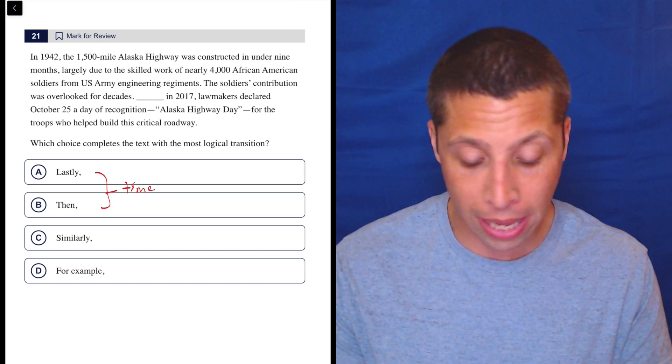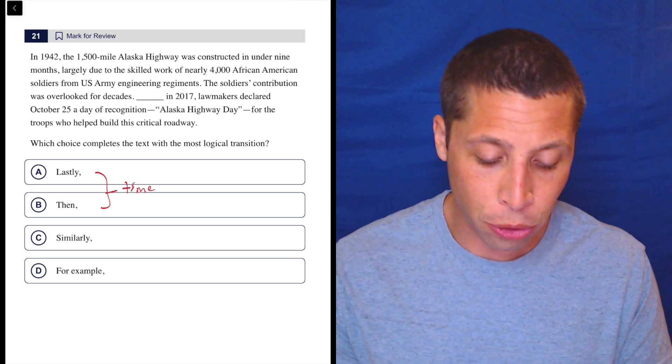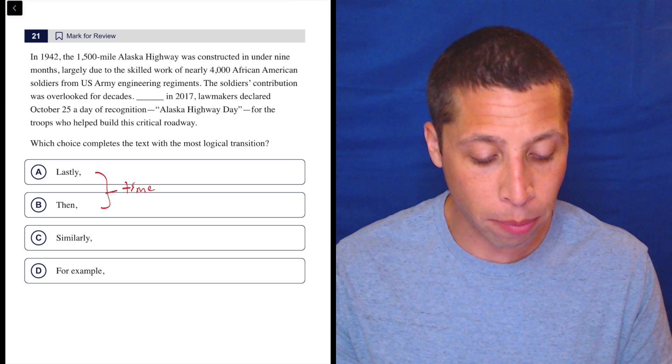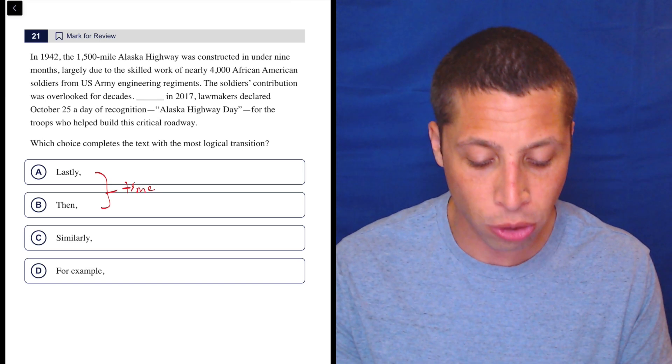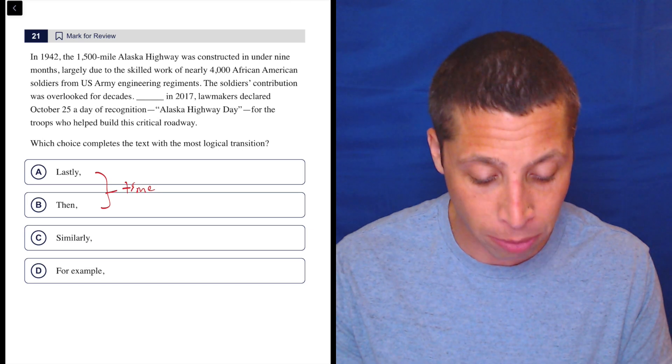Let's see if maybe there's something we would put in the blank. In 1942, the 1,500-mile Alaska Highway was constructed in under nine months, largely due to the skilled work of nearly 4,000 African-American soldiers from U.S. Army engineering regiments.